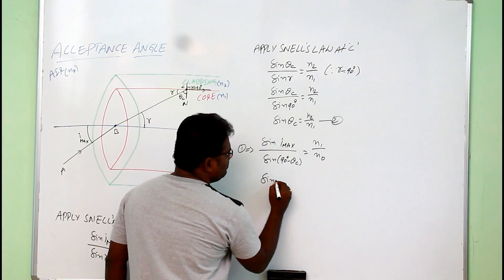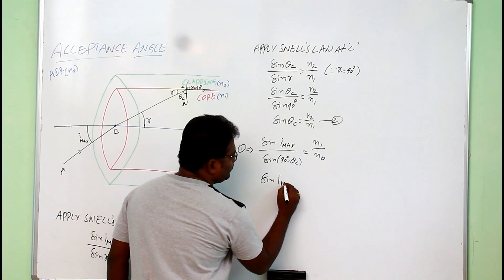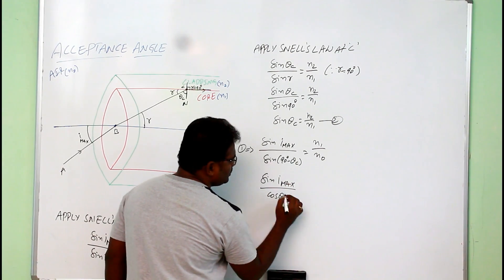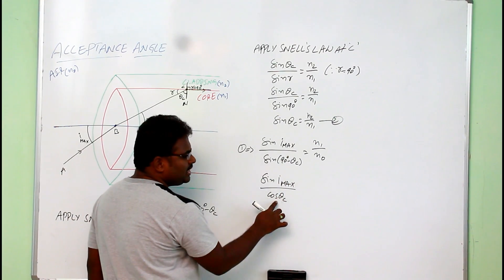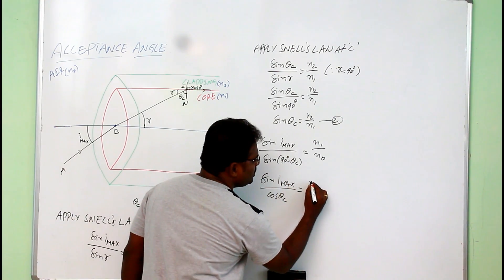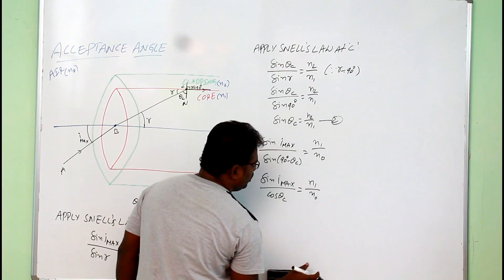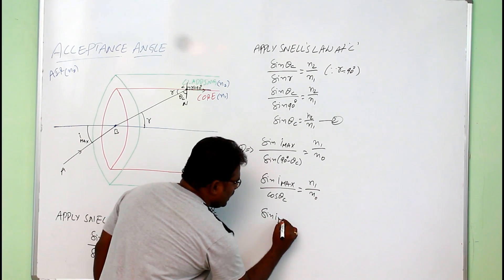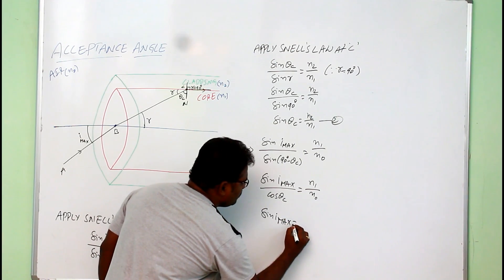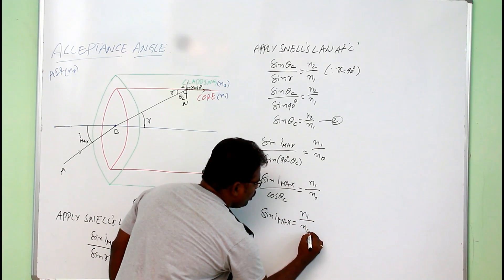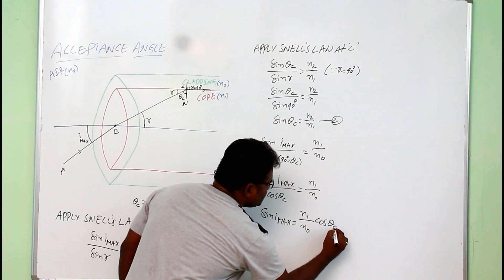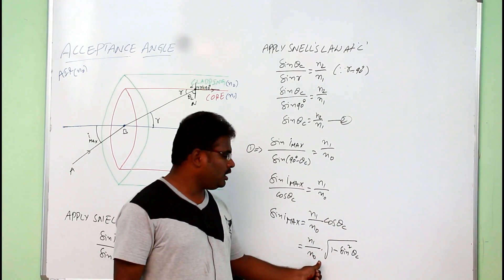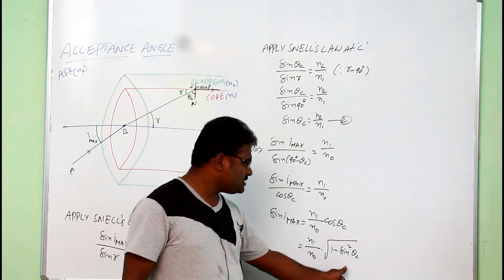Since sine(90° − theta_C) can be written as cos(theta_C), we get: sine(i_maximum) / cos(theta_C) = N1 / N0. Therefore, sine(i_maximum) = (N1 / N0) × cos(theta_C). This can be further written as sine(i_maximum) = (N1 / N0) × under root of (1 − sin²(theta_C)).